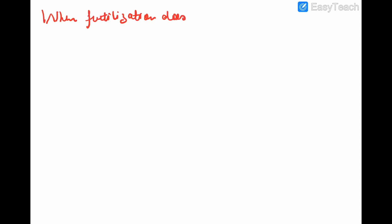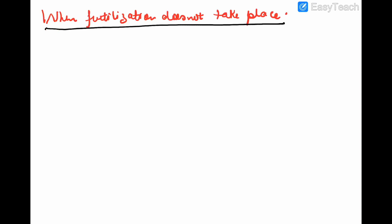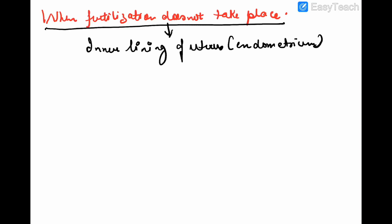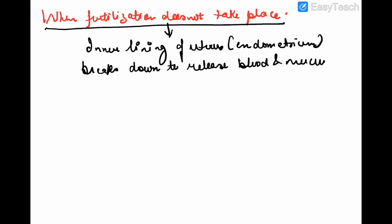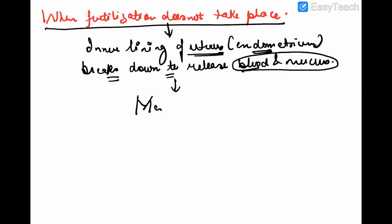If fertilization does not take place — that is, there is no fusion of sperm and egg — then the inner lining of the uterus, which is the endometrium, breaks down to release blood and mucus. This process is known as menstruation.